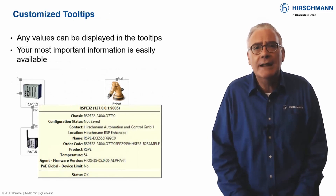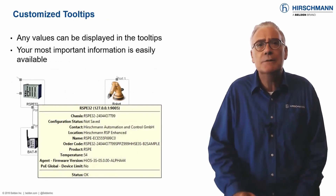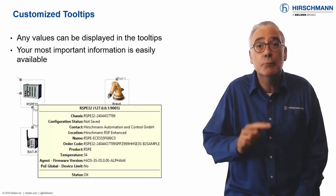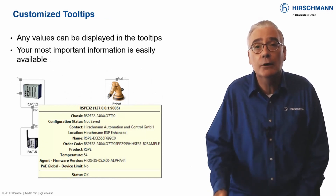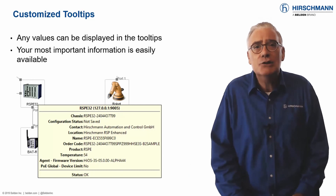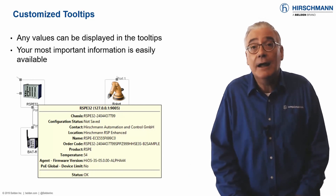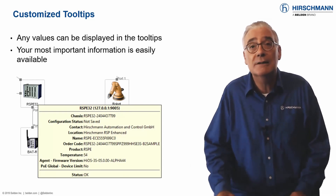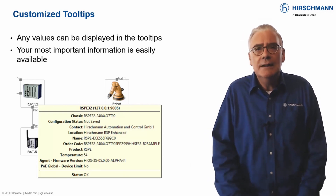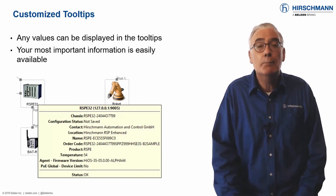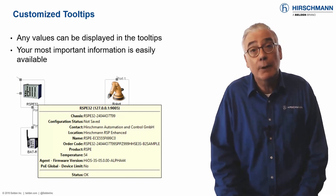The tool tip provides a pop-up screen of information when the mouse pointer is moved on top of an icon. Typically it's used for a device icon, but it works with any icon, from a device to an individual port parameter. This represents the easiest way for you to get information about a component.